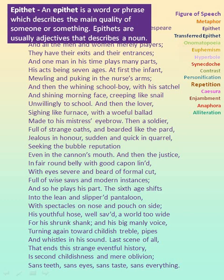Now let us see epithet. Epithet is a word or phrase which describes the main quality of someone or something, and usually they are adjectives that describe a noun. 'Whining schoolboy' — whining is the characteristic of the schoolboy expressing his unhappiness. Hence, the word schoolboy is described using the word whining. Hence, it is epithet.